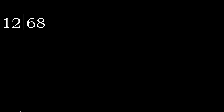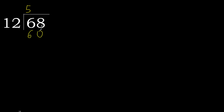68 divided by 12. 6 is less, therefore next — 68 is not less, therefore with 68. 12 multiplied by which number is nearest to 68 but not greater? 12 multiplied by 7 is greater. 12 multiplied by 6 — 72 is greater. Multiply by 5 — 60 is not greater.